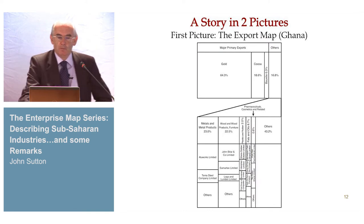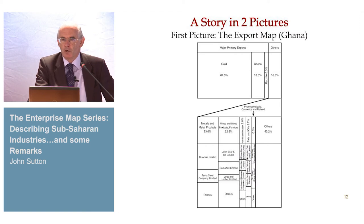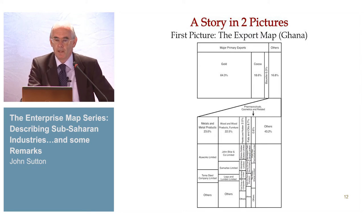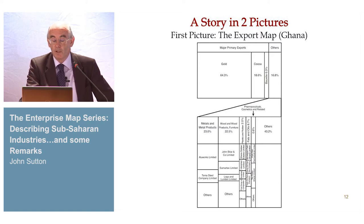In these volumes, I encapsulate the picture of the economy in two diagrams at the start of every volume. The first is an export map — it's easier to get statistics for exports, and the picture emerges in pretty much the same way whether you do production or exports. Here is the export map for Ghana, which looks very similar in other countries. The top rectangle shows the major export industries: gold is 64% of Ghana's exports, and major primary exports typically account for about three-quarters of exports in these countries. I'm interested in the other quarter — the other export industries.